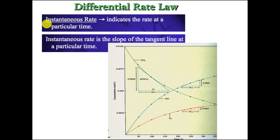First, we need to talk about what's called an instantaneous rate. In the previous lesson, I talked about average rates — we would take a section from like zero to 50 seconds and ask what's the average rate in that time interval. But it's not the actual rate because that rate is constantly changing. We want to know what the rate is at each particular point.